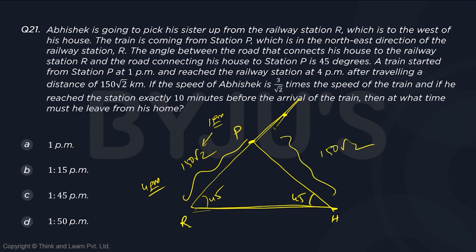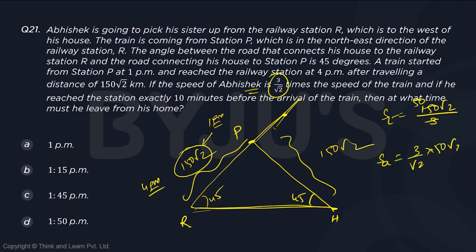The speed of Abhishek is 3/2 times the speed of the train. I can find the speed of the train: speed of the train is distance 150√2 divided by time taken, which is 3 hours. So, this is 50√2. Speed of Abhishek is (3/2) × 50√2, the √2 gets cancelled, giving 150 kilometers per hour.